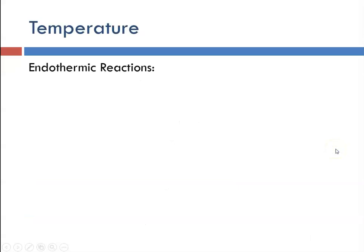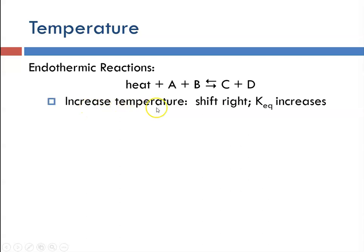Now let's talk about temperature. Temperature effects depend on whether the reaction is exothermic or endothermic. In an endothermic reaction, heat is on the reactant side because we need to add heat to get the reaction to proceed. An increase in temperature will shift the equilibrium toward the right — toward formation of products — because that reduces the stress and re-establishes equilibrium. Since more products are formed, the value of Keq will increase, as products are in the numerator of the Keq expression.